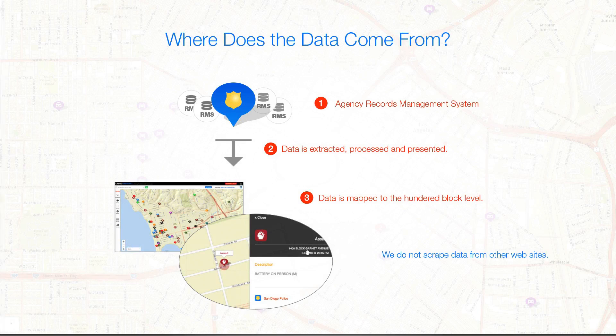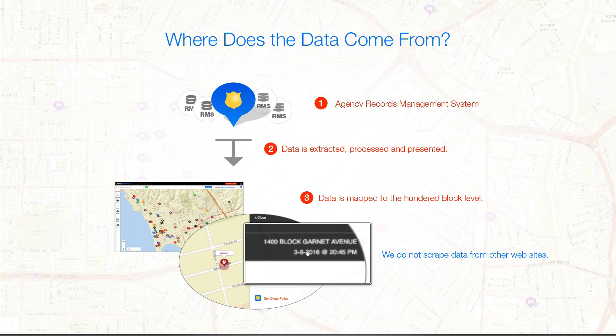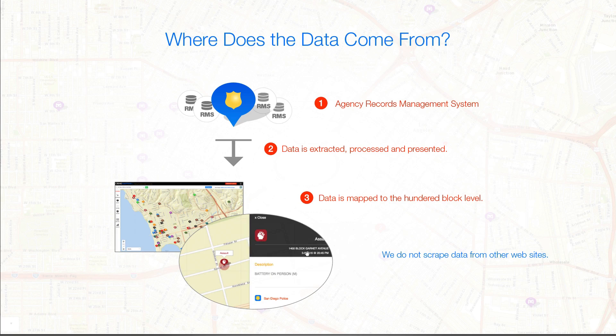Agencies that subscribe provide their crime data directly to CrimeMapping.com, and it gets extracted on a regular basis from each department's records system so that the information being viewed is the most current available. This data is always verified for accuracy, and all address information is generalized by block in order to help ensure privacy is protected.